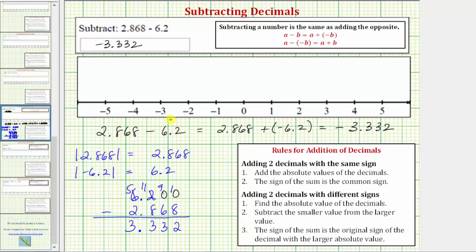Let's also model this on the number line. So to model 2.868 we start at zero and move right 2.868 units which would be just to the left of positive 3.